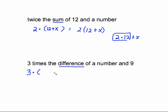'Three times the difference of a number and nine' — very similar. Three times: as soon as you see 'difference,' put parentheses and put a minus sign inside. Follow the order — 'a number' came first so x goes in the first position, then nine. Remove the dot, and it's three times (x − 9).